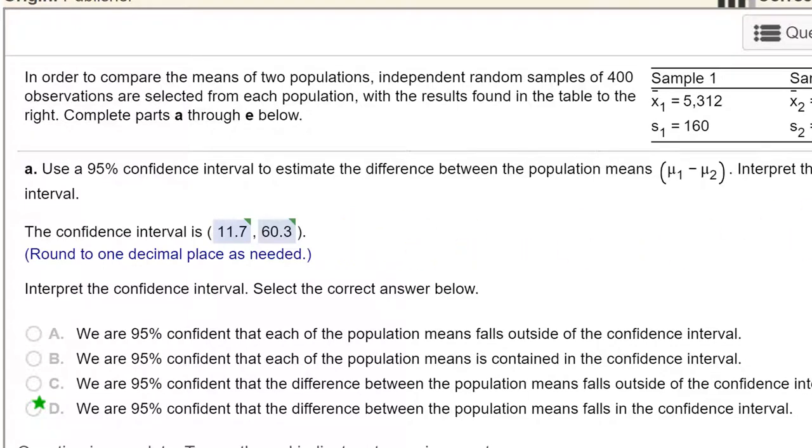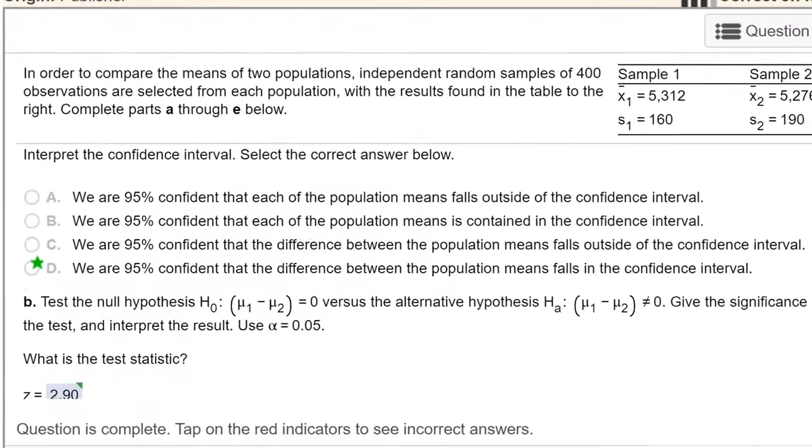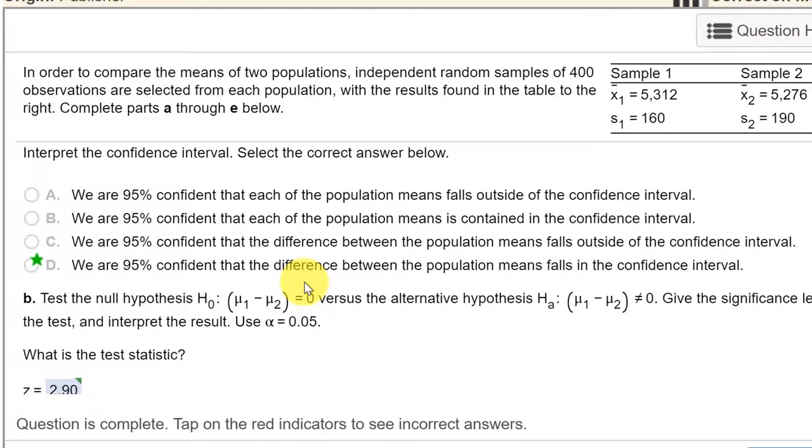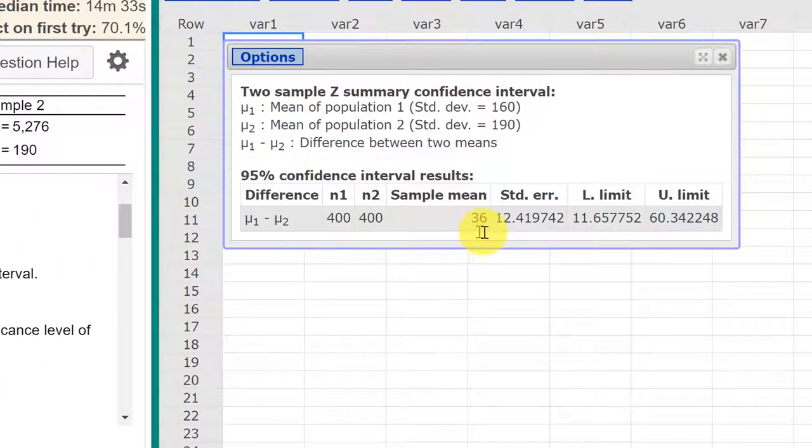And that gives us the answer we need there. And of course the interpretation of that is we are 95% confident that the difference, this 36, falls in that confidence interval. So that's pretty straightforward.